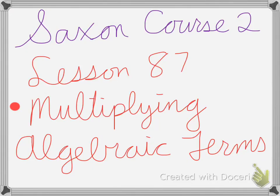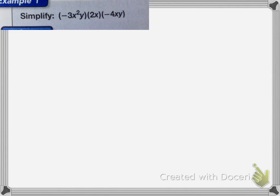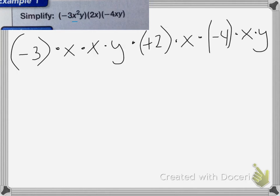Saxon Course 2 Lesson 87 is on multiplying algebraic terms. Here I have this very big number, negative 3x squared y times 2x times negative 4xy. The minus signs on these terms represent negative numbers, not subtraction. So we're going to multiply these three terms together to make one whole term. First I need to list the factors of these x squares. I need to separate it all out. All separated out, I have negative 3 times x times x times y times a positive 2 times x times a negative 4 times x times y. So all I've done is I've taken like these x squareds and I broke it up into two x's.